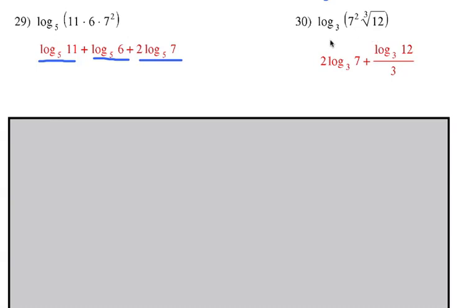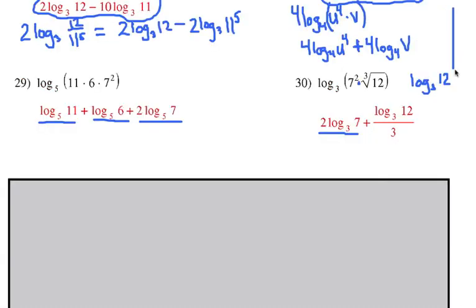Now this one, I might have to write it down a little bit. We have a product here, we have the 7 squared times the third root of 12. So here we have log base 3 of 7 squared, the 2 goes in front, so it's 2 log base 3 of 7. And this is going to be 12 to the 1 third power. We're going to have log base 3 of 12 to the 1 third power. Move the 1 third in front, which actually makes a fraction of 3 in the denominator, so now it's log 3, 12, 1 third of that, and that's that part right there.